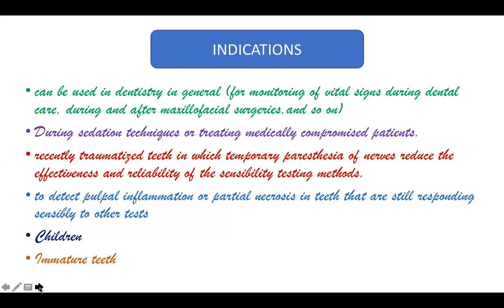The indications of the pulse oximeter are wide-ranging. In dentistry, it can be used for monitoring vital signs during dental care, during and after maxillofacial surgeries, and during sedation or treating medically compromised patients. It can assess pulp vitality in recently traumatized teeth where there is temporary paresthesia of the nerves, making sensibility tests unreliable. It can also detect inflammation or partial necrosis in teeth still responding to sensibility tests, and is particularly useful in children and in assessing the vitality of immature teeth.